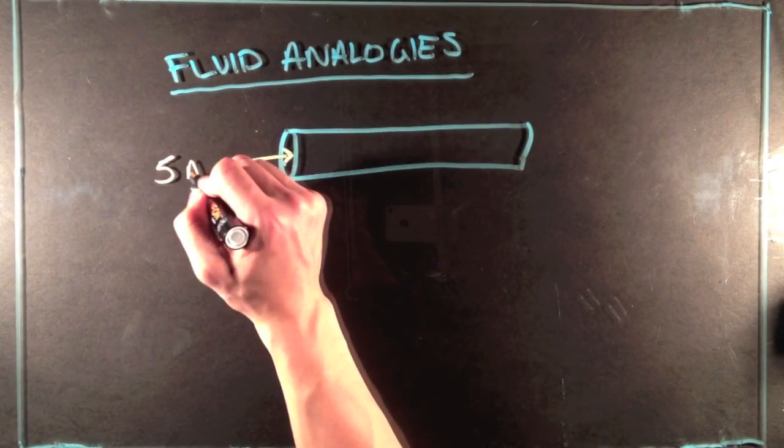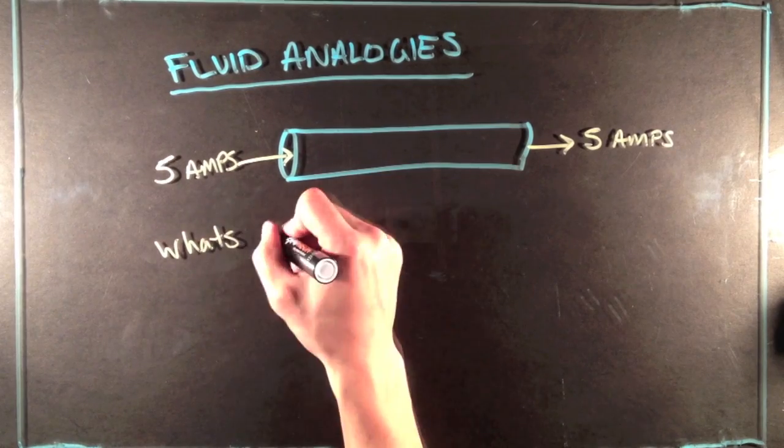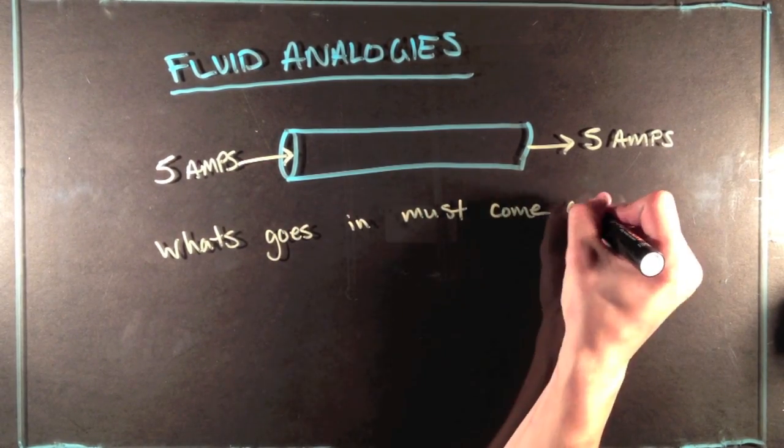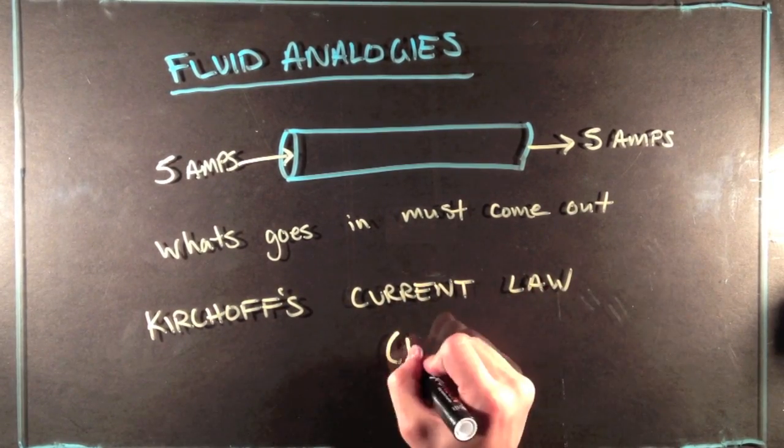So, to simplify it even further, if we just took a wire and fed five amps in, you would expect five amps to come out of it. This is a basic concept known as Kirchhoff's Current Law, or KCL, and this will be very useful in future topics when we talk about circuit analysis.